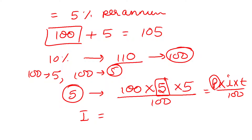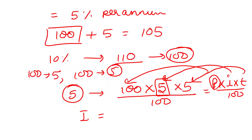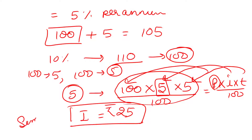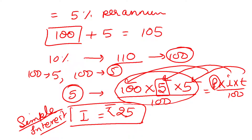The simple interest formula is: SI = P × I × T / 100. For example, if P is 100, I is 5, and T is 5 years, then the interest is 25 rupees. Simple interest means interest is calculated only on the original principal each year. However, in banks and many financial institutions, compound interest is used instead.